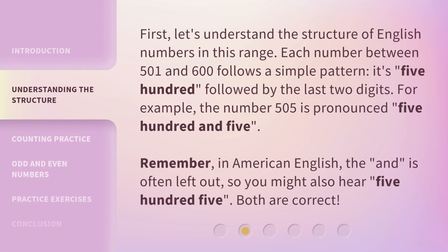First, let's understand the structure of English numbers in this range. Each number between 501 and 600 follows a simple pattern — it's 500 followed by the last two digits. For example, the number 505 is pronounced five hundred and five. Remember, in American English, the 'and' is often left out, so you might also hear five hundred five. Both are correct.